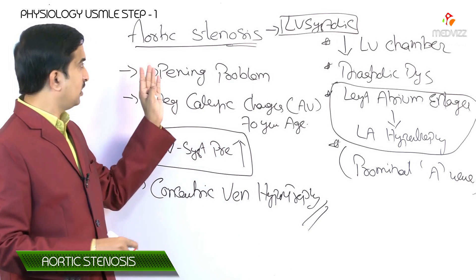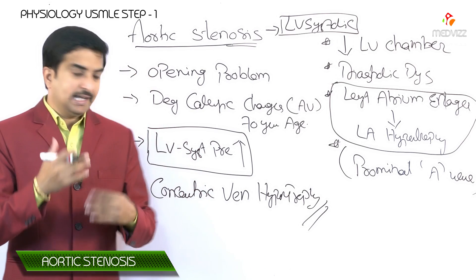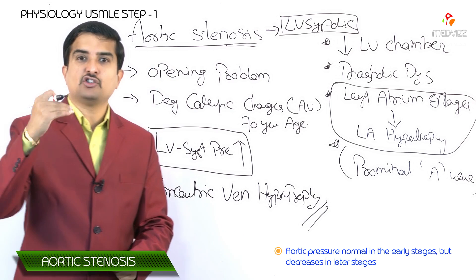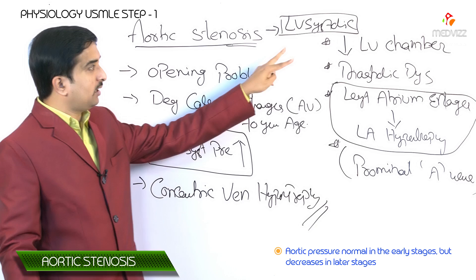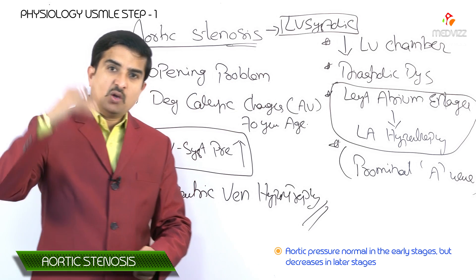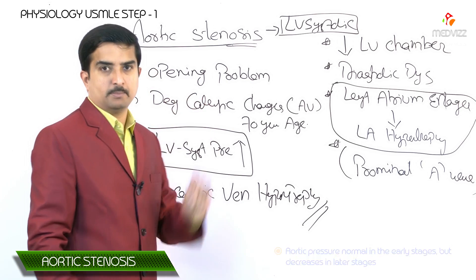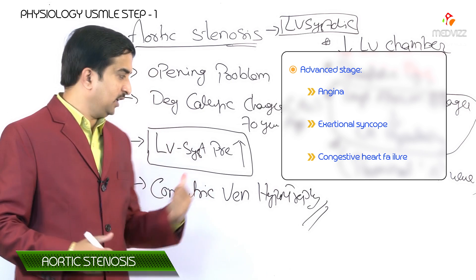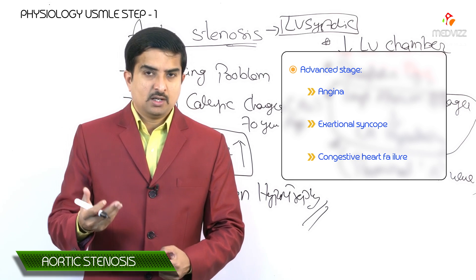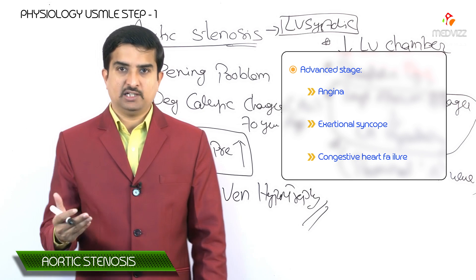Initially during early stages, ventricular hypertrophy assists ejection, but eventually leads to systolic dysfunction of the left ventricle in long-standing cases. Aortic pressure is normal in early stages, but when systolic dysfunction develops, aortic pressure decreases in later stages. In advanced stages, too much hypertrophy increases the oxygen and vascular demand of the left ventricle, and when supply cannot meet demand, the patient develops angina, exertional syncope, and congestive heart failure.